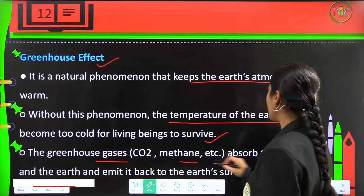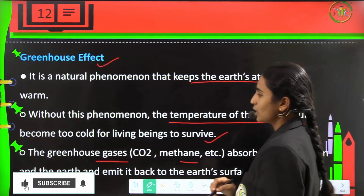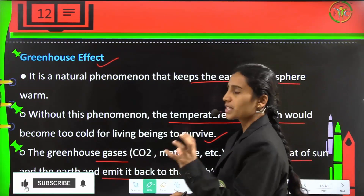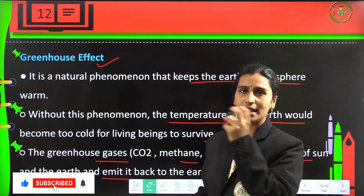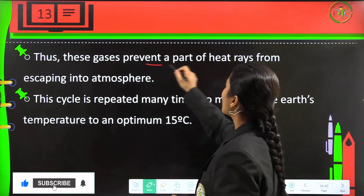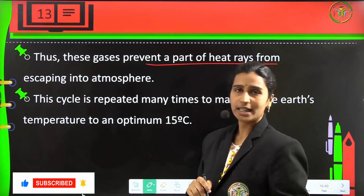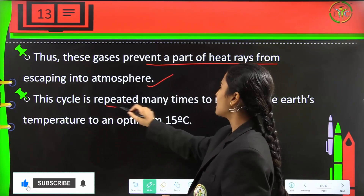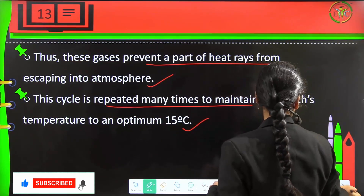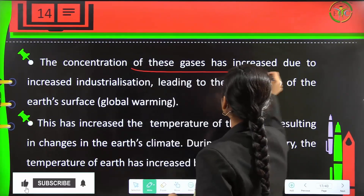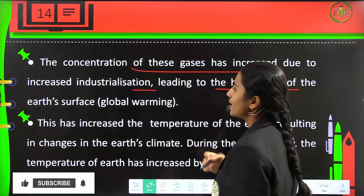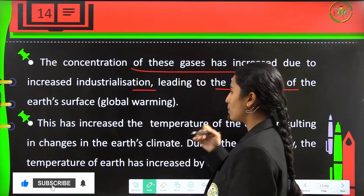Greenhouse gases like CO2 and methane absorb the heat of the sun and the earth and emit it back to the earth's surface. These gases prevent a part of heat rays from escaping into the atmosphere, and this cycle is repeated many times to maintain the earth's temperature at an optimum of 15 degrees centigrade. The concentration of these gases has increased because of increased industrialization, which has led to the heating up of the earth's surface — which is global warming.